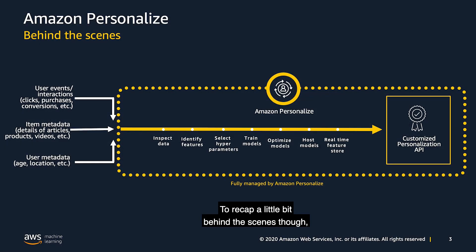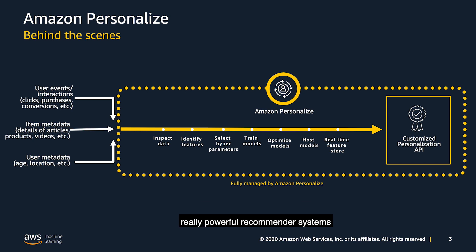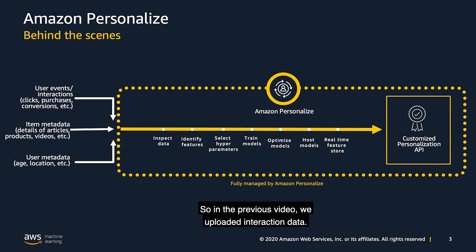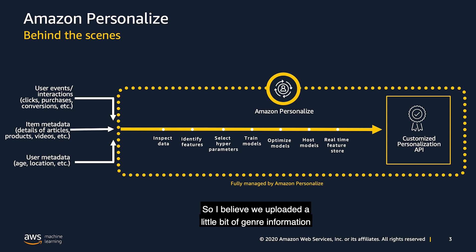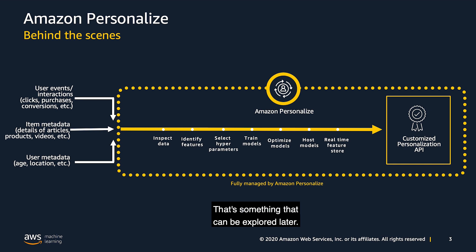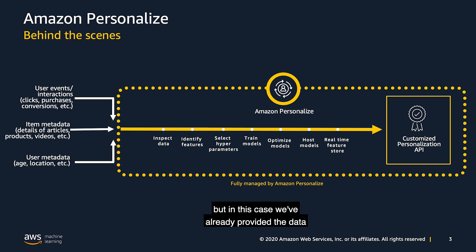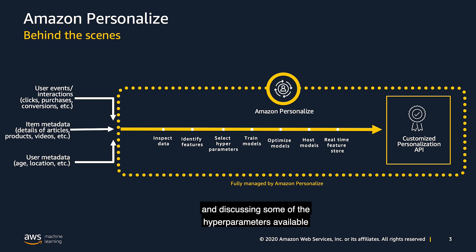To recap, Amazon Personalize is a fully managed machine learning service dedicated to helping you build powerful recommender systems and scale them based on the data you provide. In the previous video we uploaded interaction data — how users engage with your content — as well as some item metadata, specifically genre information about the movie dataset. We didn't include user metadata, which will be covered in advanced material later. In this video we'll be picking particular models and discussing some of the hyperparameters available so we can build something pretty performant.